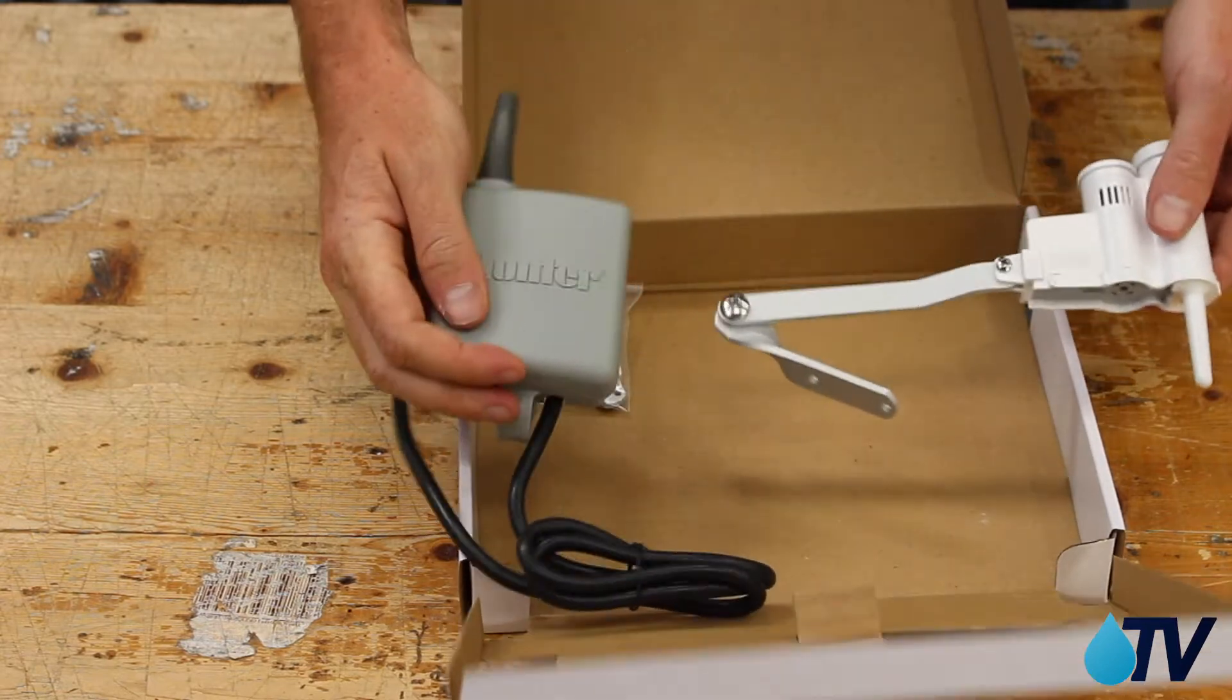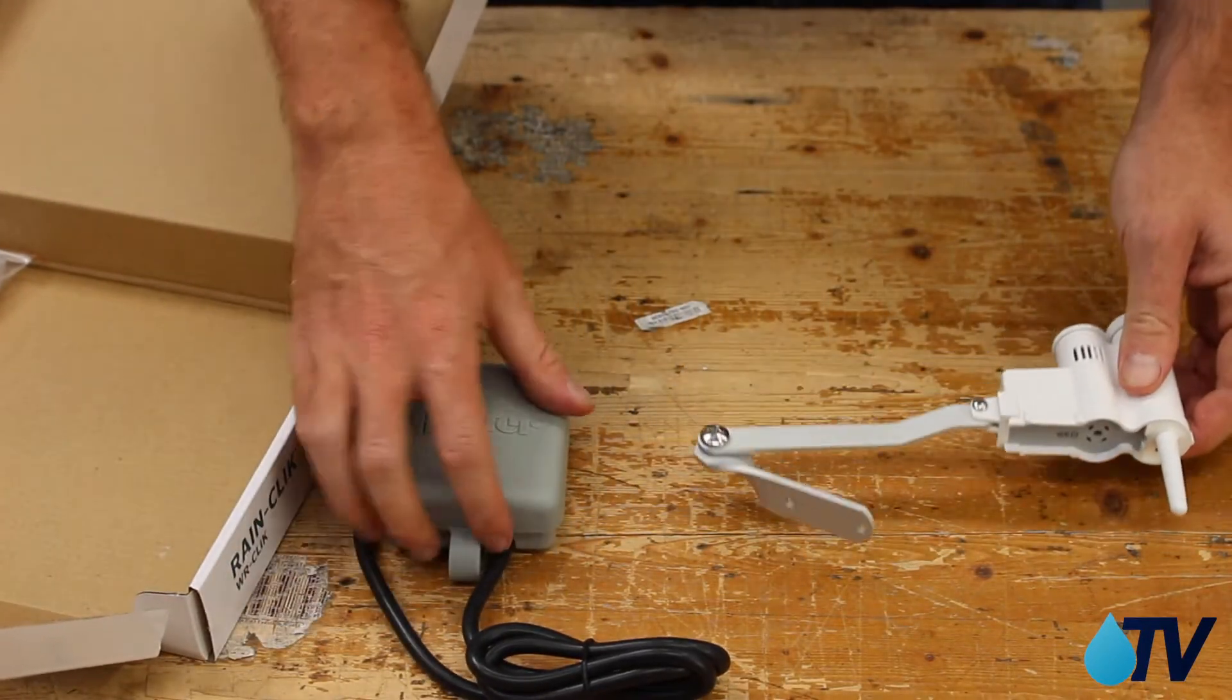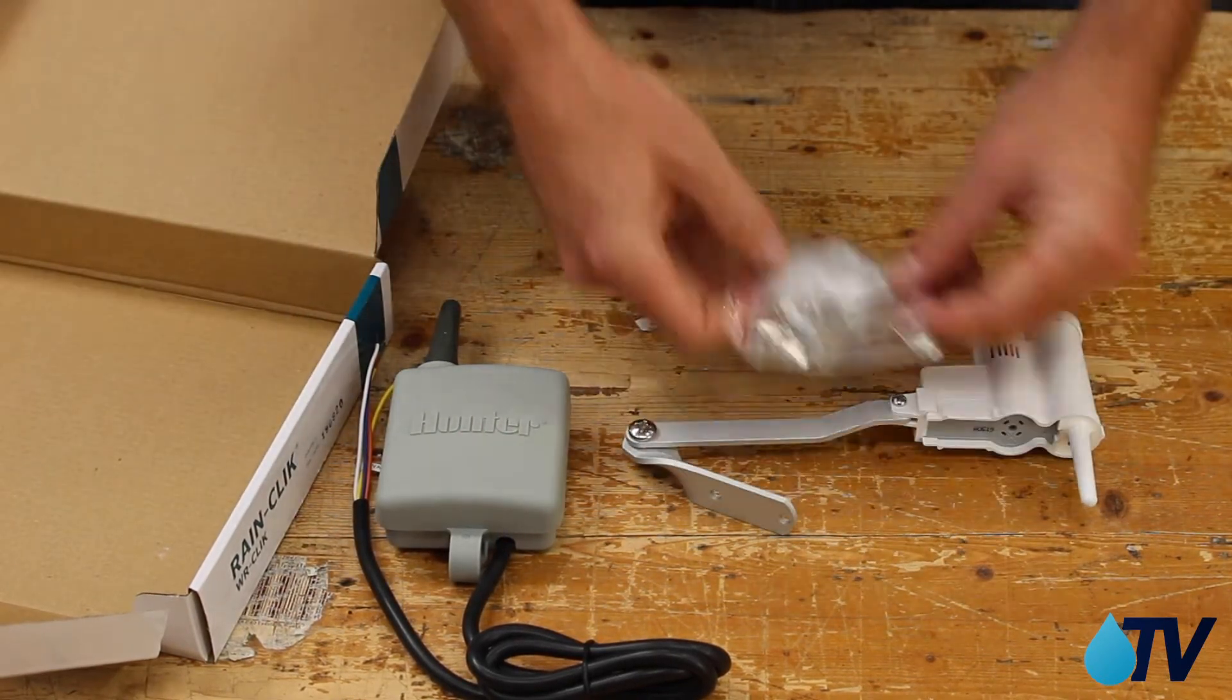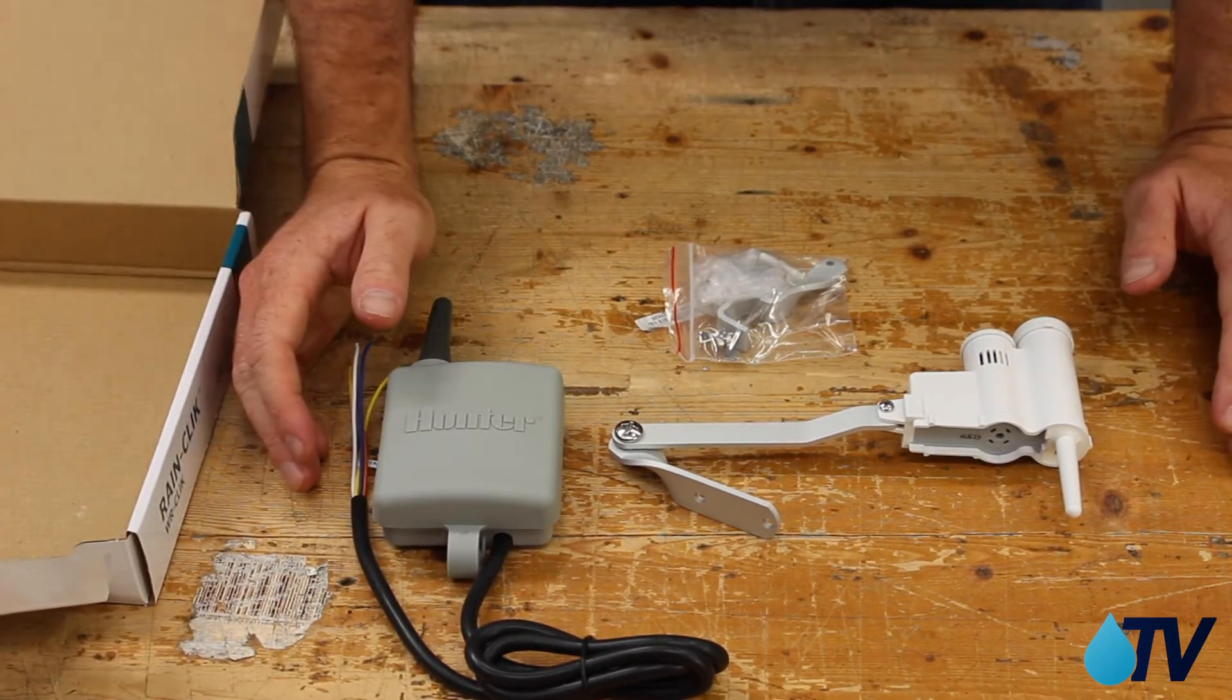And then here is your receiver. So you'd mount this right near your irrigation controller, and this will communicate with this. Now we've also got some screws and wall mounts, so you have everything you need to install your Hunter Wireless RainClick. And that's it.